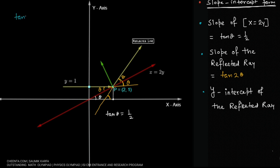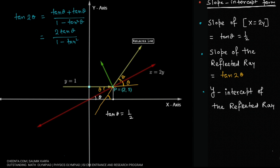We need to find tan(2*theta). Using the formula tan(2*theta) = 2*tan(theta) / (1 - tan²(theta)), and replacing tan(theta) = 1/2, we calculate this to be 4/3. So the slope of the reflected ray is 4/3.